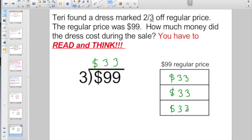This is where the reading is every bit as important as the math. It says two-thirds off the price. If it's marked two-thirds off, do you count those? No, it's a $99 regular price dress. They took two-thirds off the price.